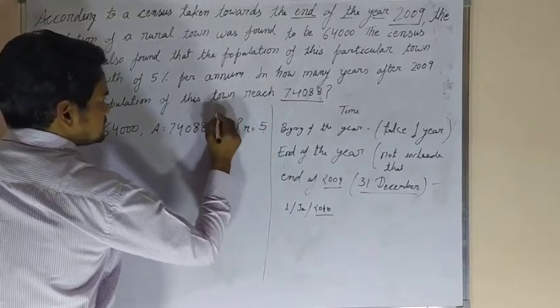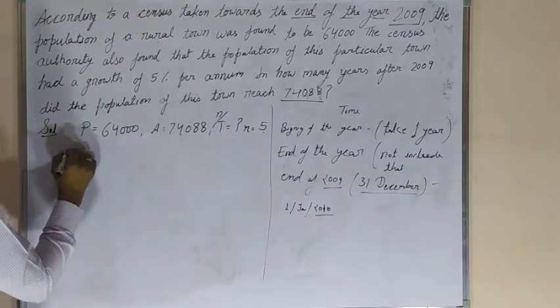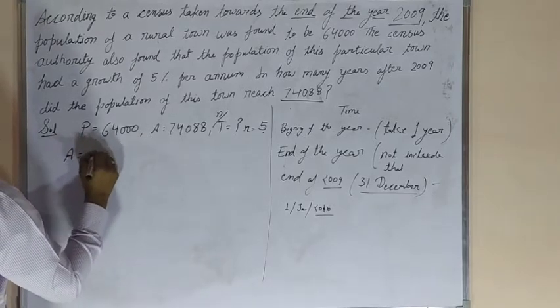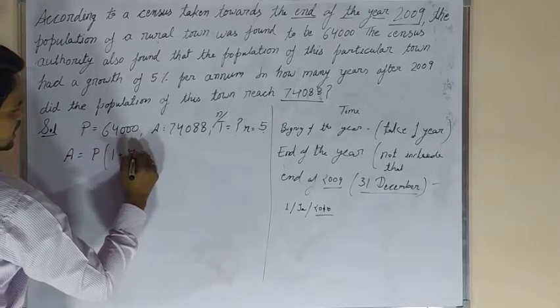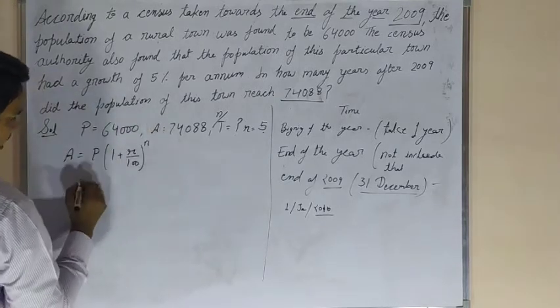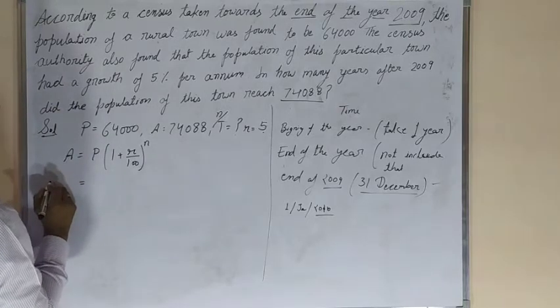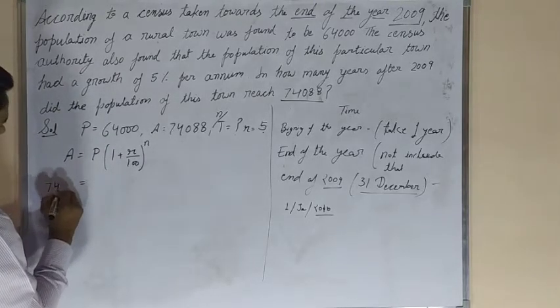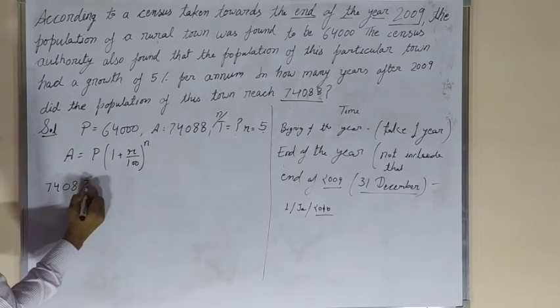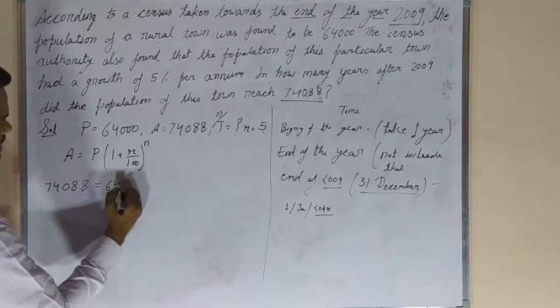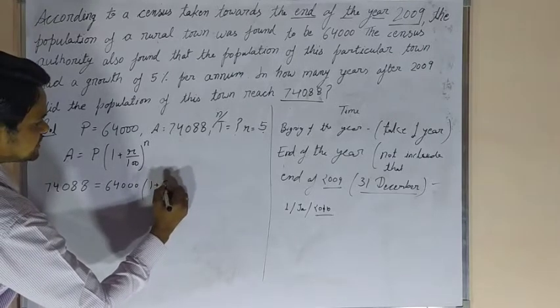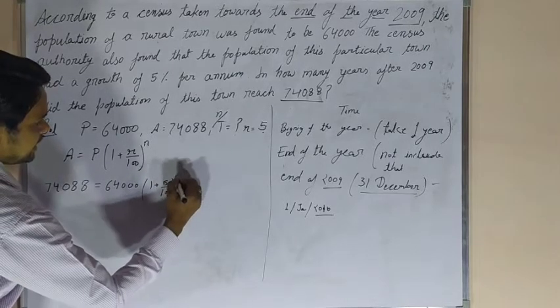T is also N. Now, A equals P times (1 plus R upon 100) raised to power N. A is 74,088, P is 64,000, and R is 5 by 100.